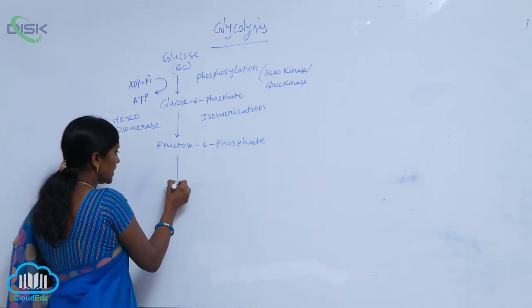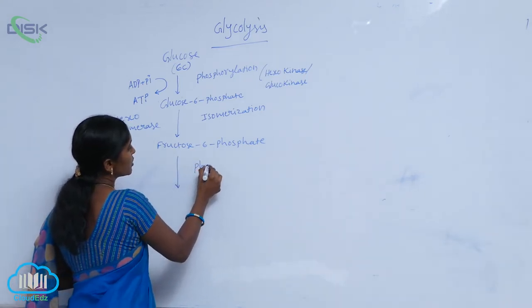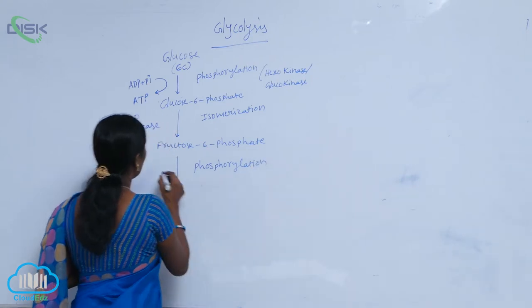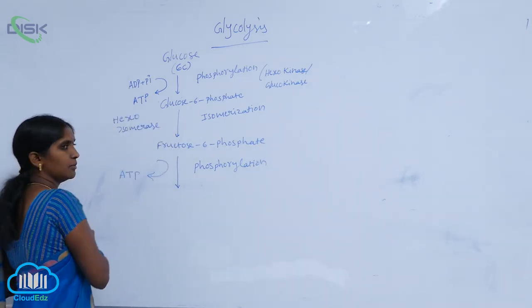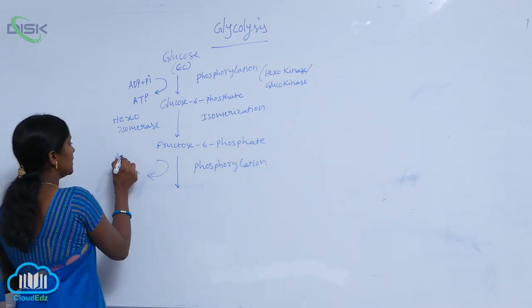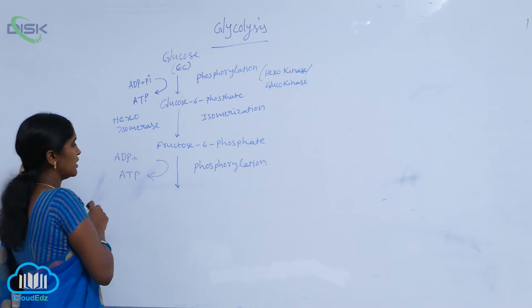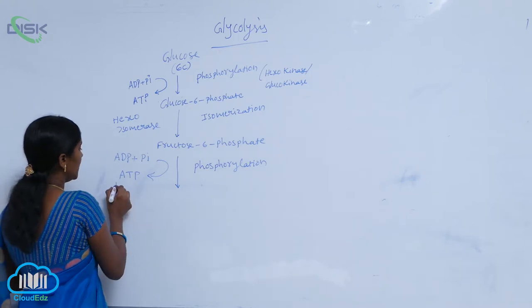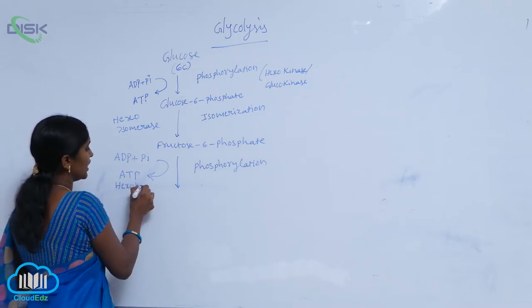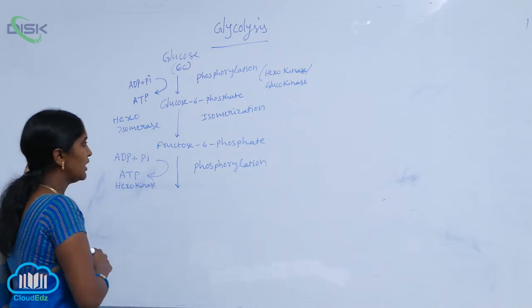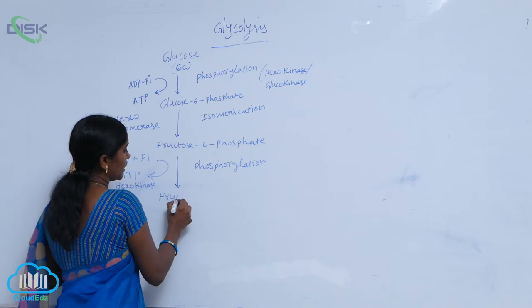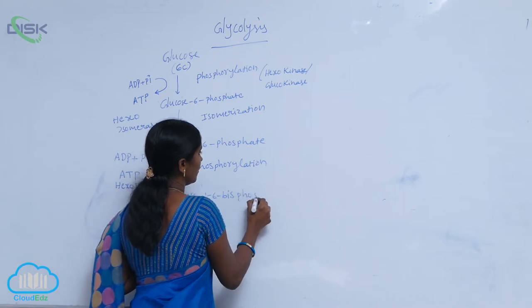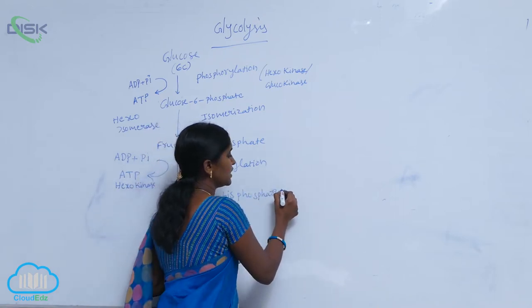The next reaction is the second phosphorylation. Again, ATP is required here — adenosine triphosphate is converted into adenosine diphosphate and inorganic phosphate. The mediating enzyme is hexokinase, and the result is fructose-1,6-bisphosphate.